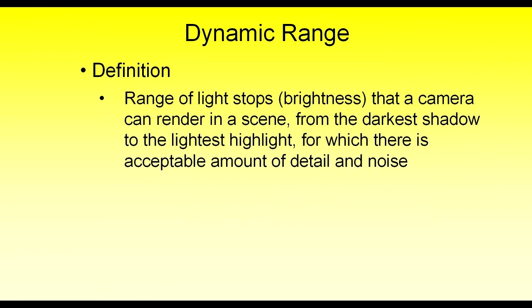So what is dynamic range? The technical definition is it's the range of stops that a camera can render in a scene from the very darkest of shadows to the lightest of highlights, and for which there's an acceptable amount of detail and noise for each of those extremes. A light stop is just another way of saying a doubling or halving of light. So if a scene has 14 stops of dynamic range, that's saying that the scene has 14 levels or doublings of light values from the very darkest of shadows to the highlights.